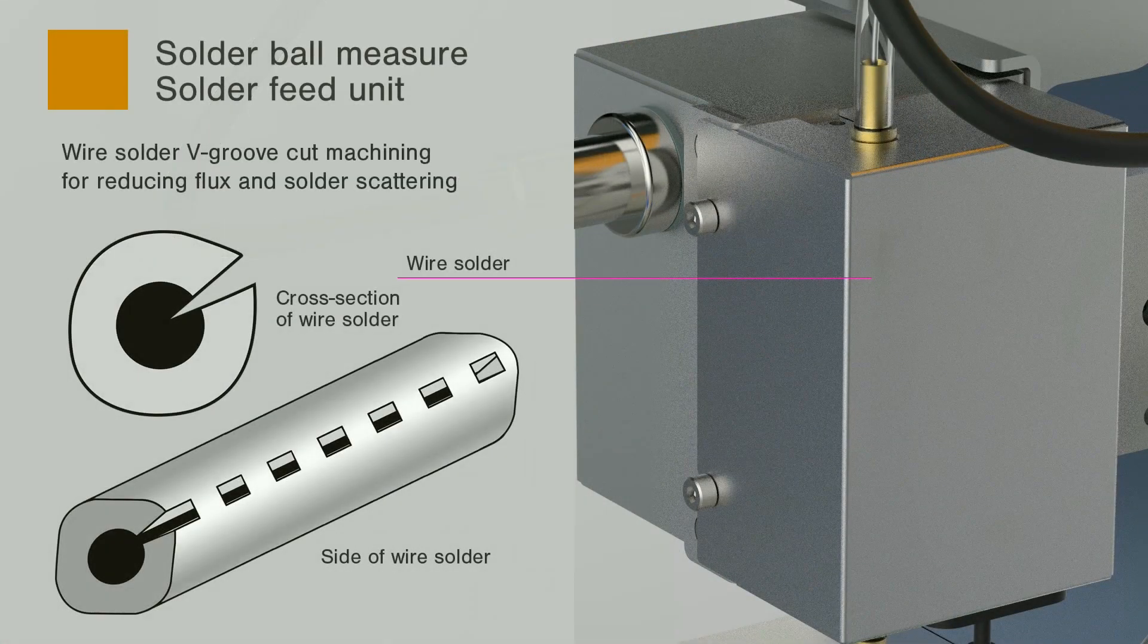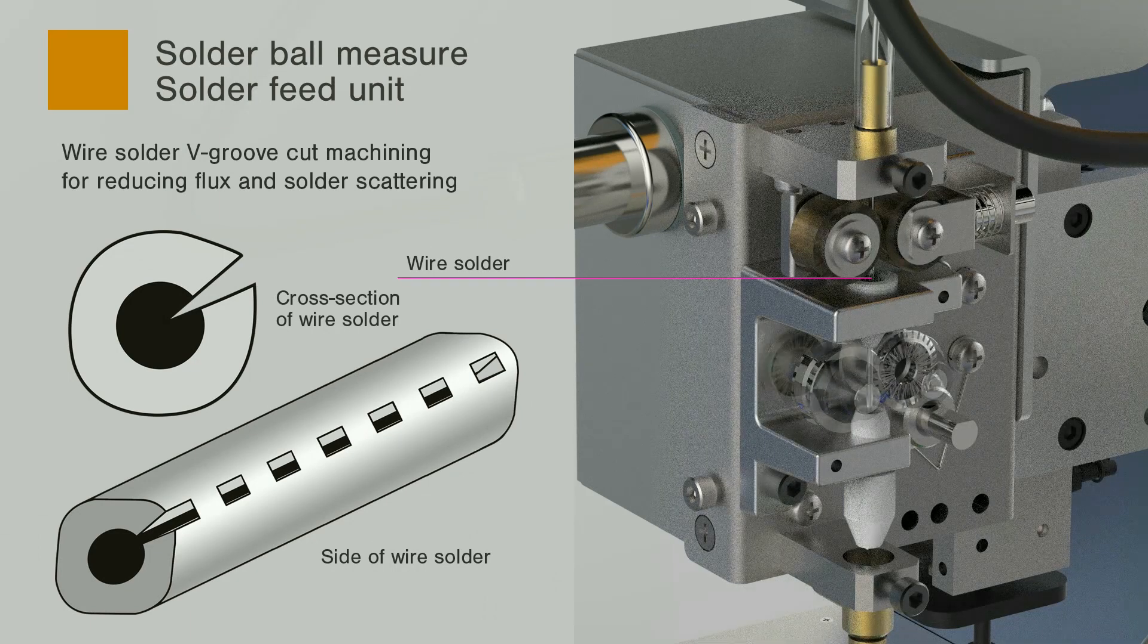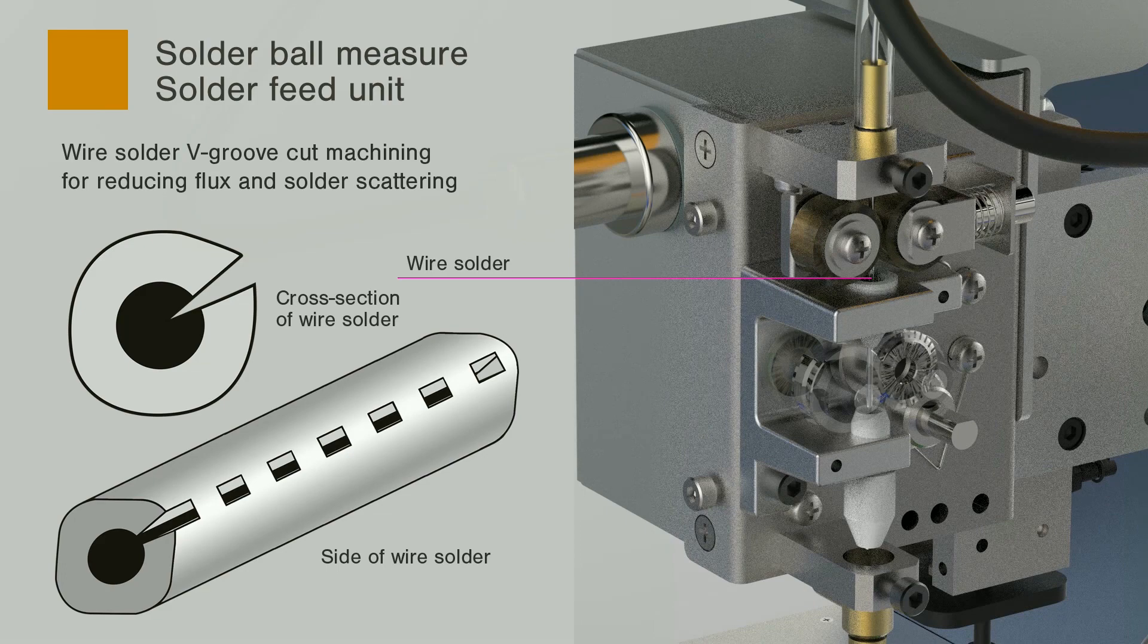The feed unit is equipped with a feature to cut the V-groove as a standard option in order to reduce splashing of flux and soldering balls.